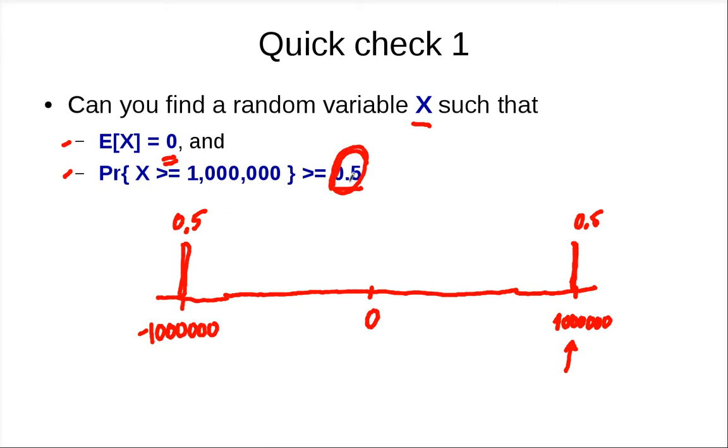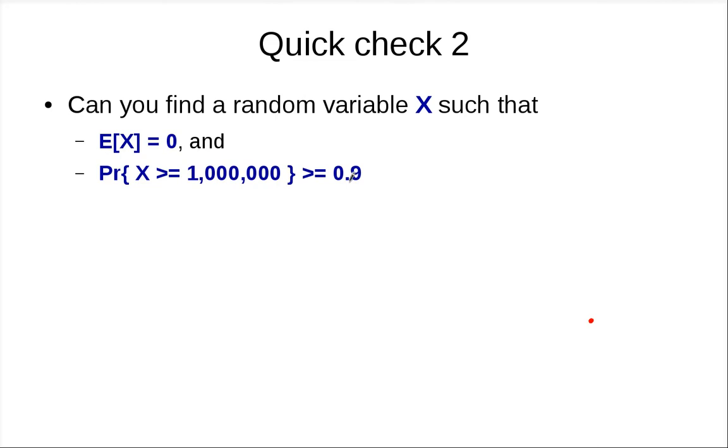Let's look at another question. Can you find a random variable X such that it's even worse? E[X] = 0, but X can be extremely large for 90% of the time. I'll wait a few seconds.